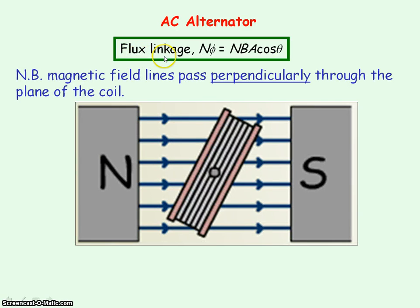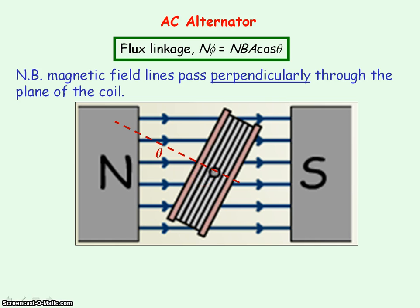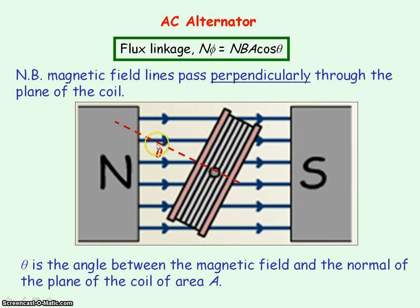Flux linkage is equal to the product of the number of turns of coil and the magnetic flux. Flux is equal to the magnetic flux density times the area of the coil, and we have this cos theta because we need to consider the magnetic field lines passing perpendicularly through the plane of the coil. Theta is the angle between the magnetic field lines and the normal to the plane of the coil.